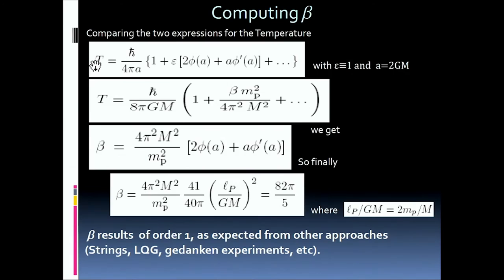And we can apply the previous computation for the temperature. And now we can match, we can ask to match the temperature computed using the deforming metric with the temperature computed using the deformed uncertainty relation, the GUP. And this gives you information about beta.